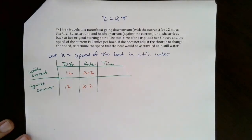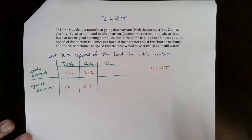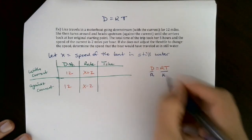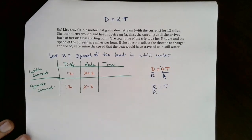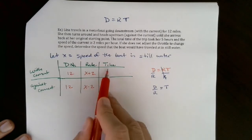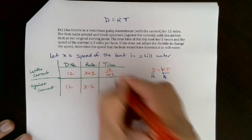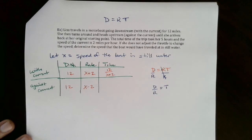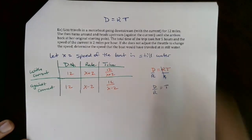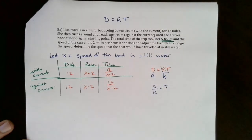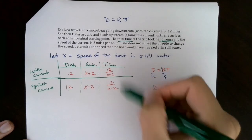The total time is five hours, but you can't just split that in half. Using distance = rate × time, solving for time gives time = distance ÷ rate. So the time going with the current is 12 over (x + 2), and the time going against the current is 12 over (x − 2). The five hours is used when you set up your equation: time with current plus time against current equals total time.